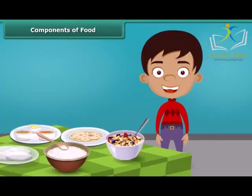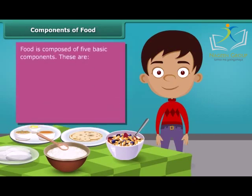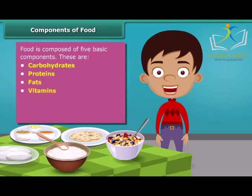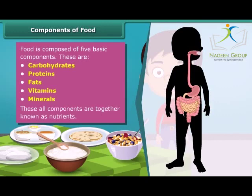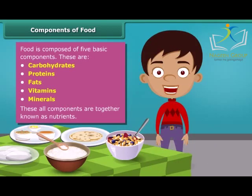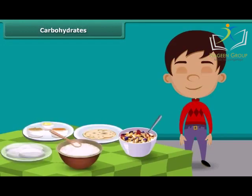A question may arise: how do we get energy by eating food and why is food known as fuel for our body? Food has five basic components: carbohydrates, proteins, fats, vitamins and minerals. All these components together are called nutrients. A body digests food and absorbs these nutrients to provide energy. Some nutrients help us fight against diseases. Each food item contains all nutrients in different amounts and each nutrient plays a different role in the body. Let us know about these nutrients one by one in detail.